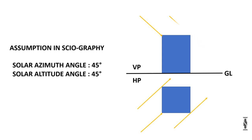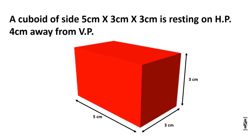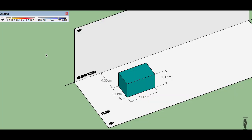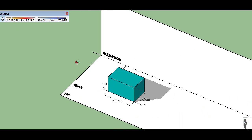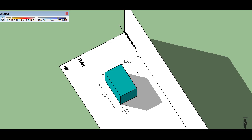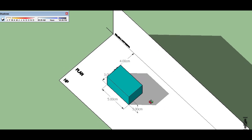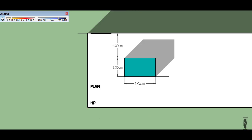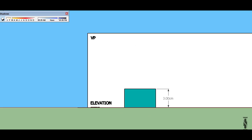Now take an example of a cuboid of side 3 cm by 3 cm by 5 cm which is resting on HP, 4 cm away from VP. First take a look at the 3D representation. Here we can see the horizontal plane, vertical plane, and ground line. The dimension of the cube is 3 cm by 3 cm and 5 cm, resting on HP at a distance of 4 cm from VP. Now switch on the shadow mode — we can see the shadow of the cube falling completely on the horizontal plane.